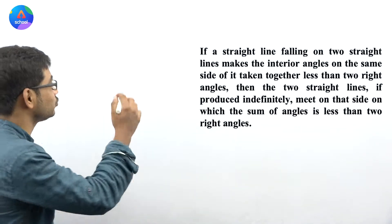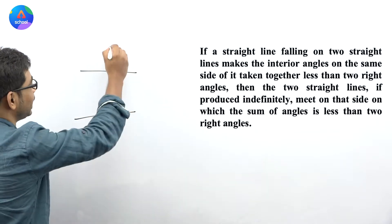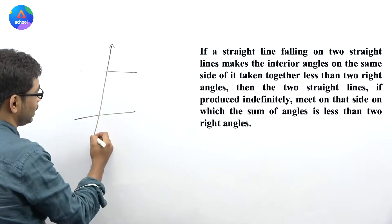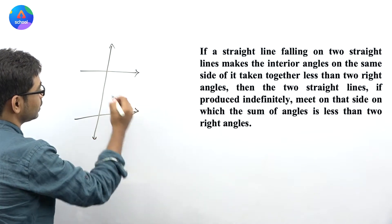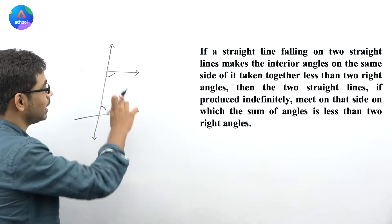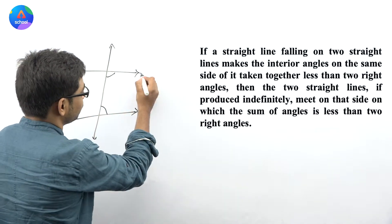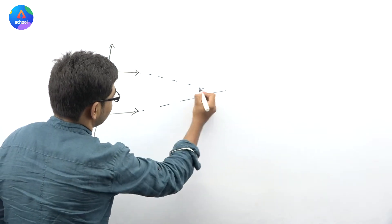So what it's actually saying is that you have two lines, and these two lines are falling on this line. If these angles sum to less than 180 degrees, less than two right angles, then they will intersect if extended forward.